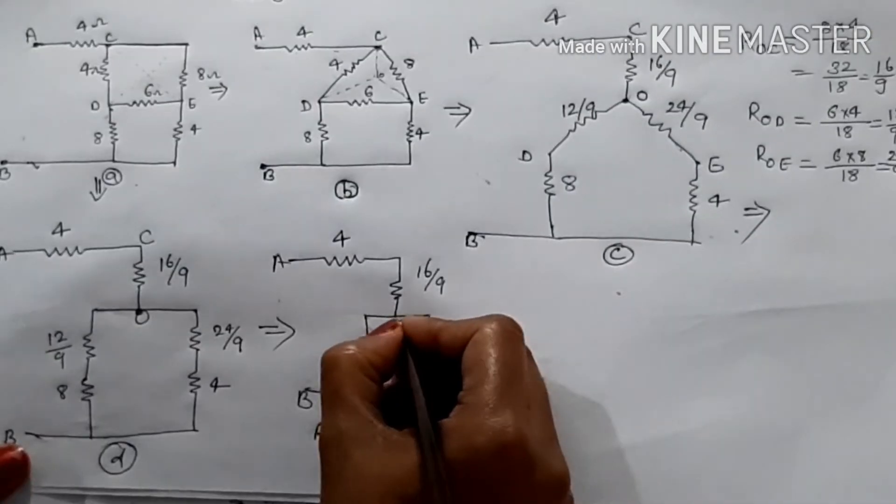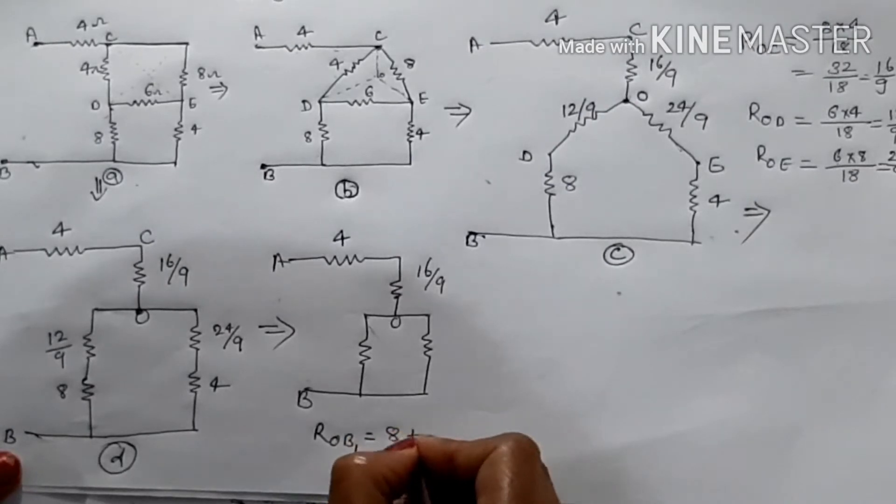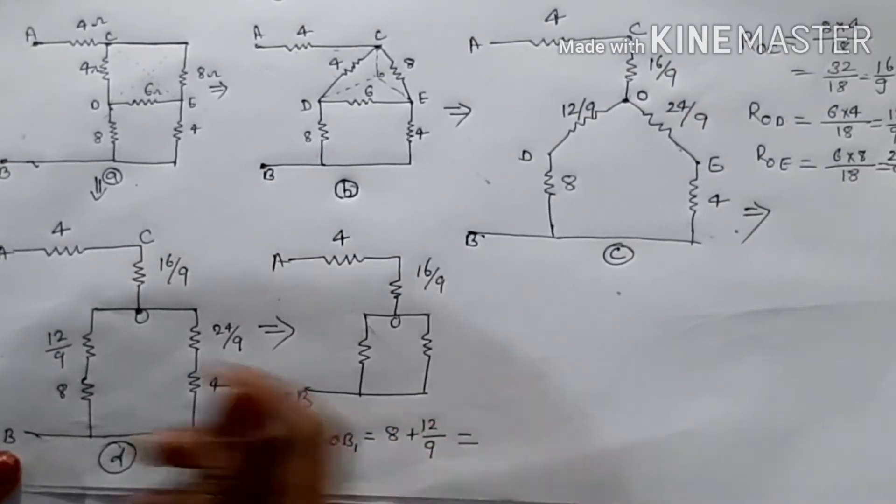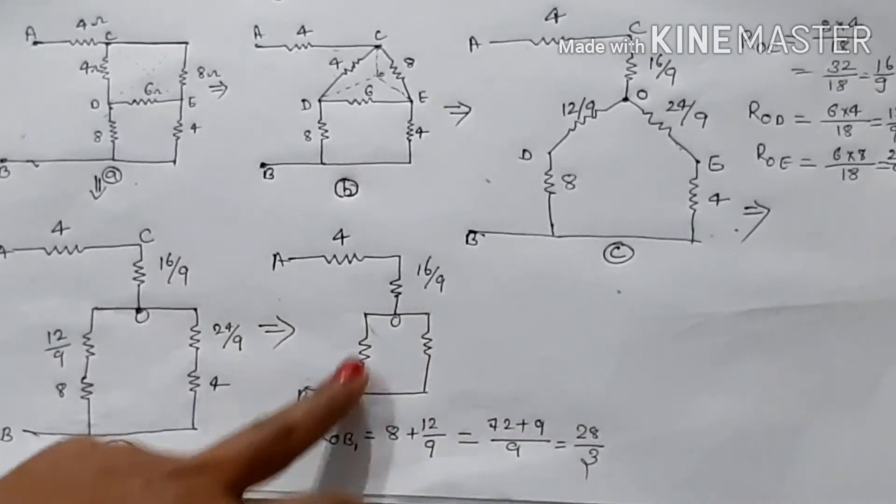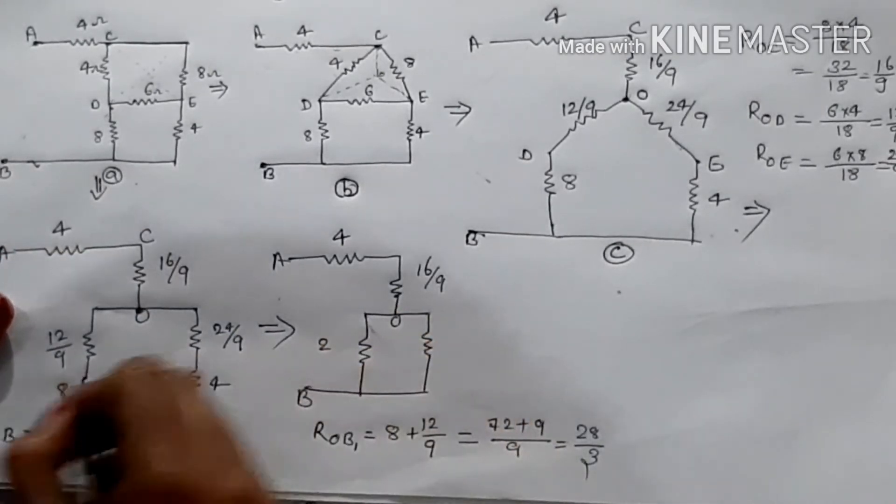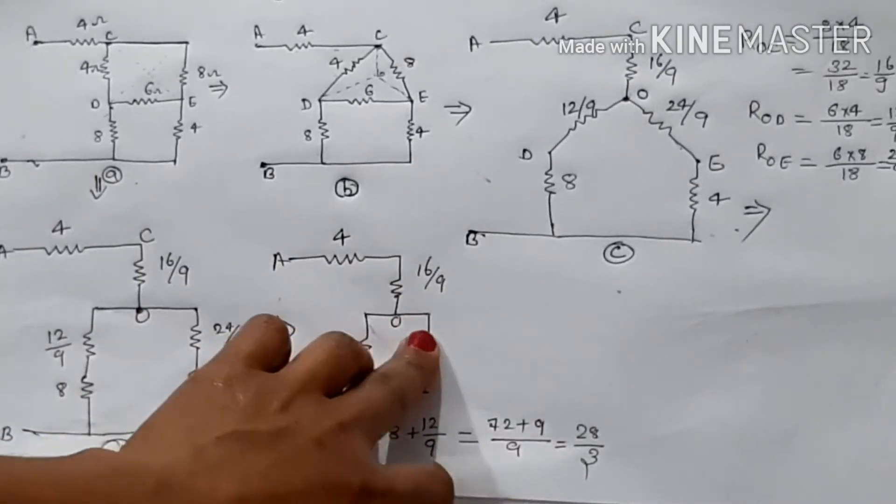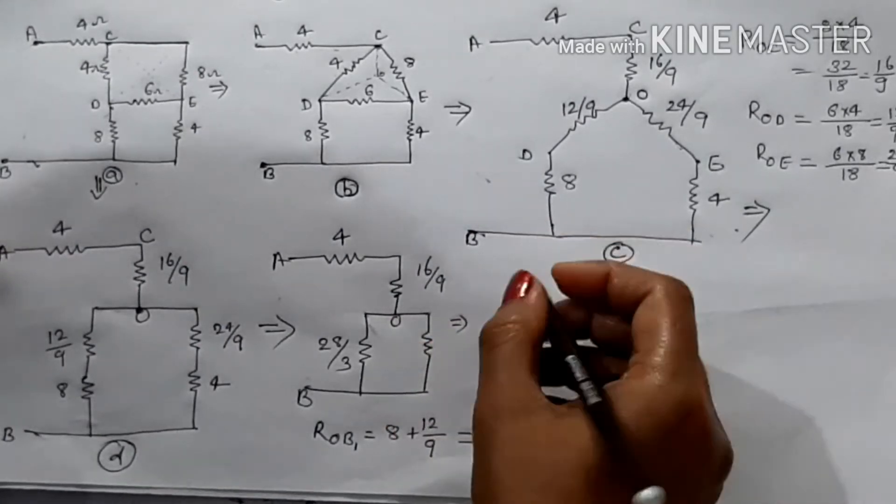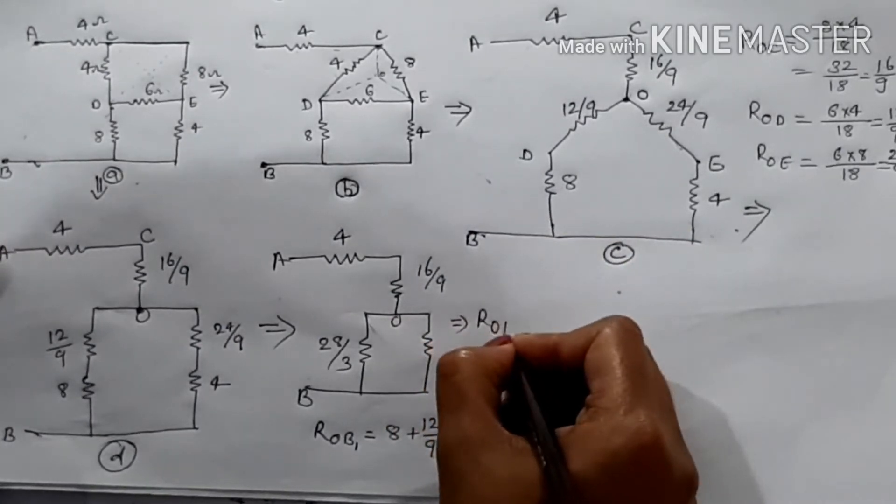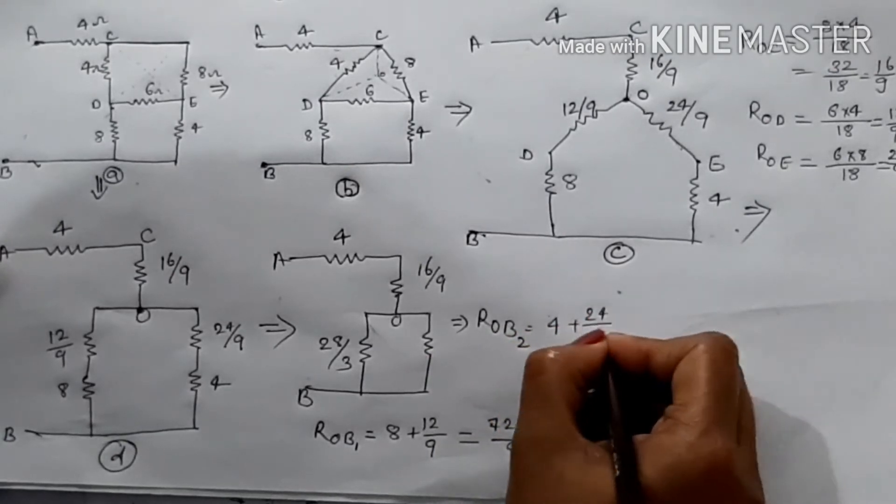Suppose point 4, then ROB1 equal to 8 plus 12 upon 9, equal to 28 upon 3. Then ROB2 is 4 plus 24 upon 9.